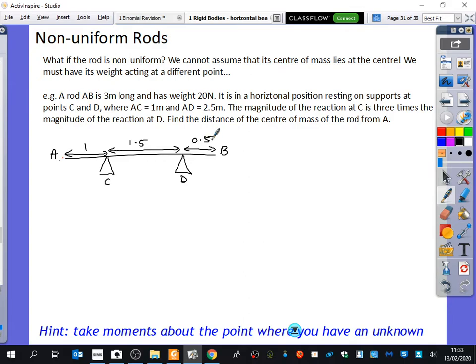The magnitude of the reaction at C is three times the reaction at D. So this one is bigger than this one. Let's call that one R. Let's call that one 3R. This one is three times bigger than this one. So there's only one thing I haven't put on here. What is it? The weight. And I don't know where to put it.